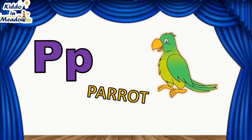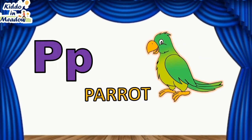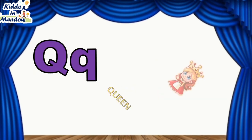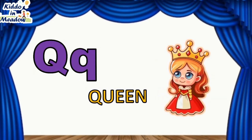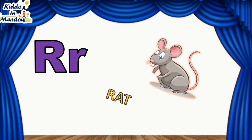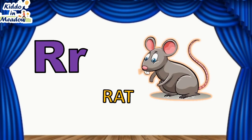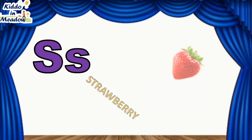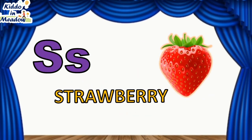O is for Orange. P is for Parrot. Q is for Queen. R is for Rat. S is for Strawberry.